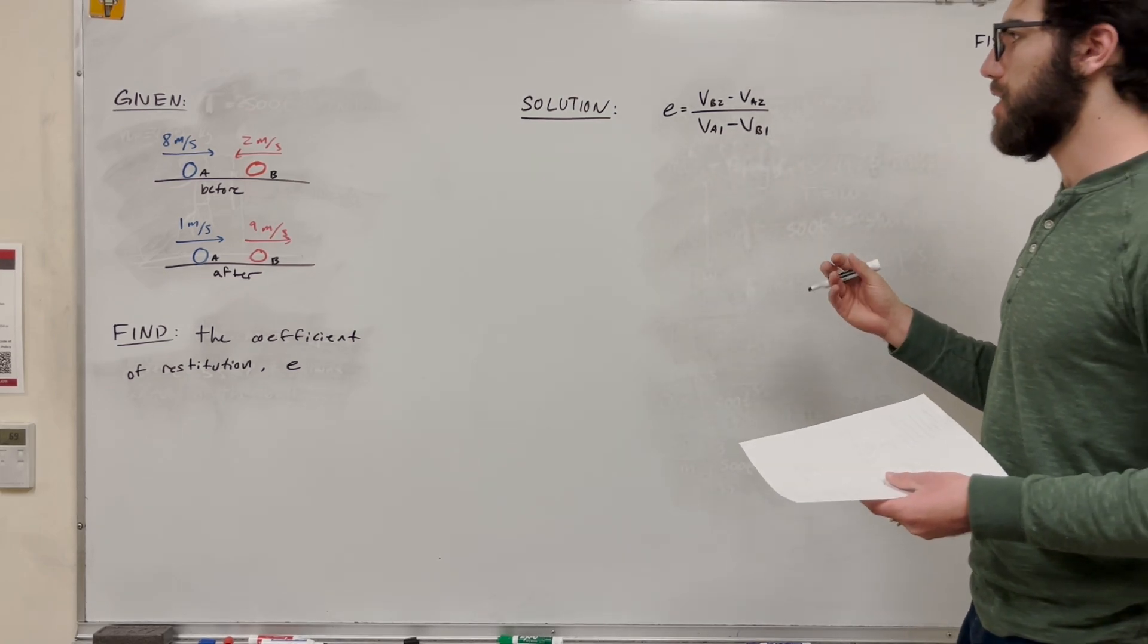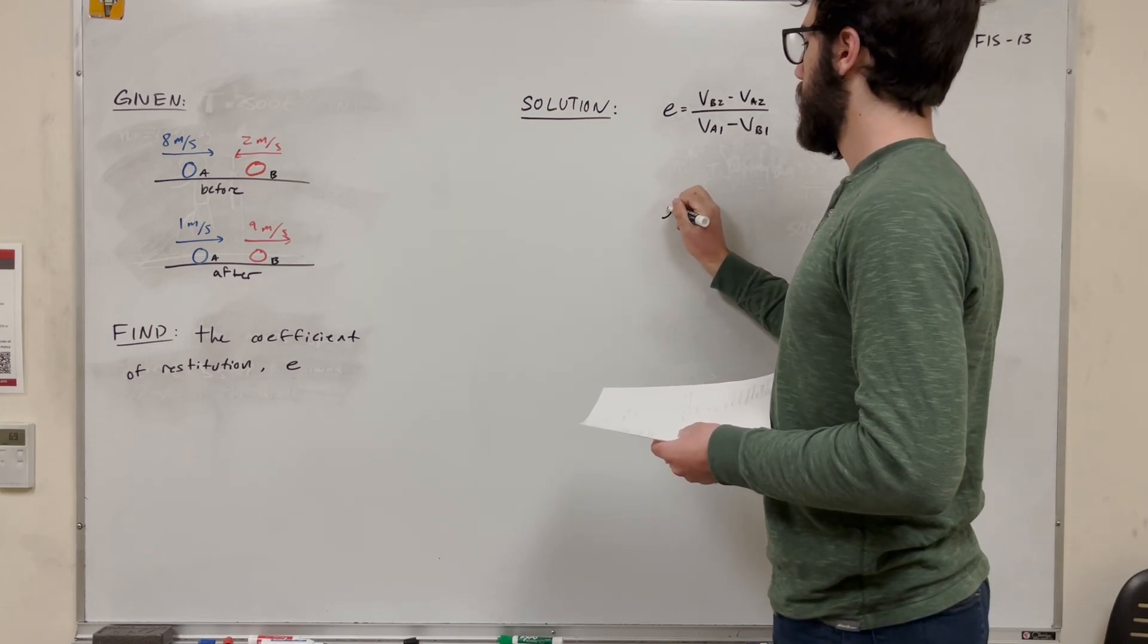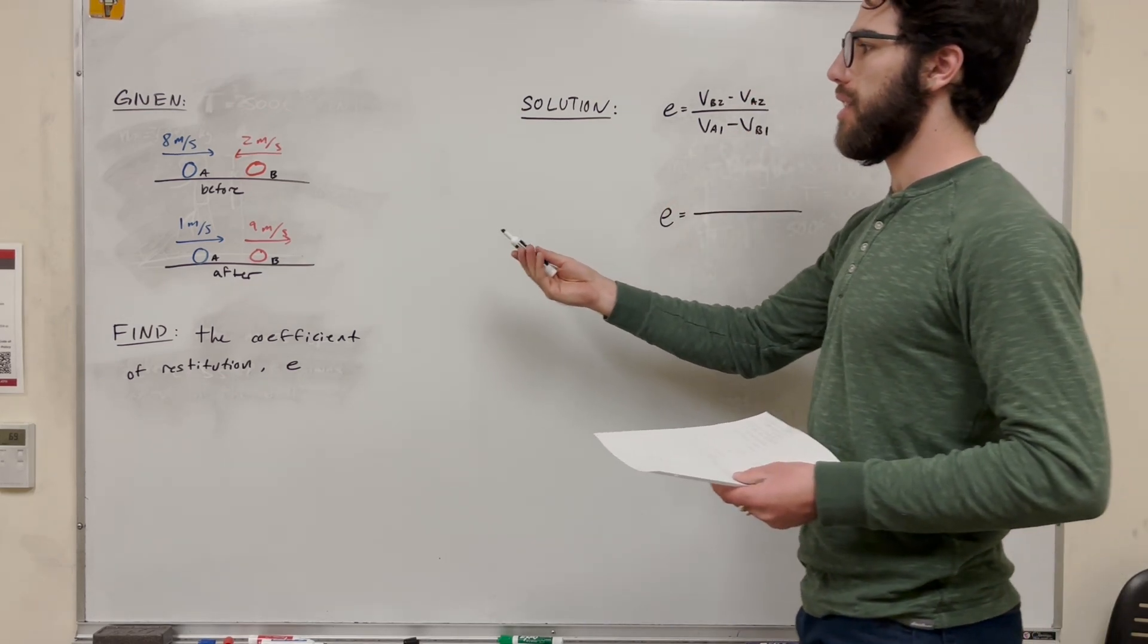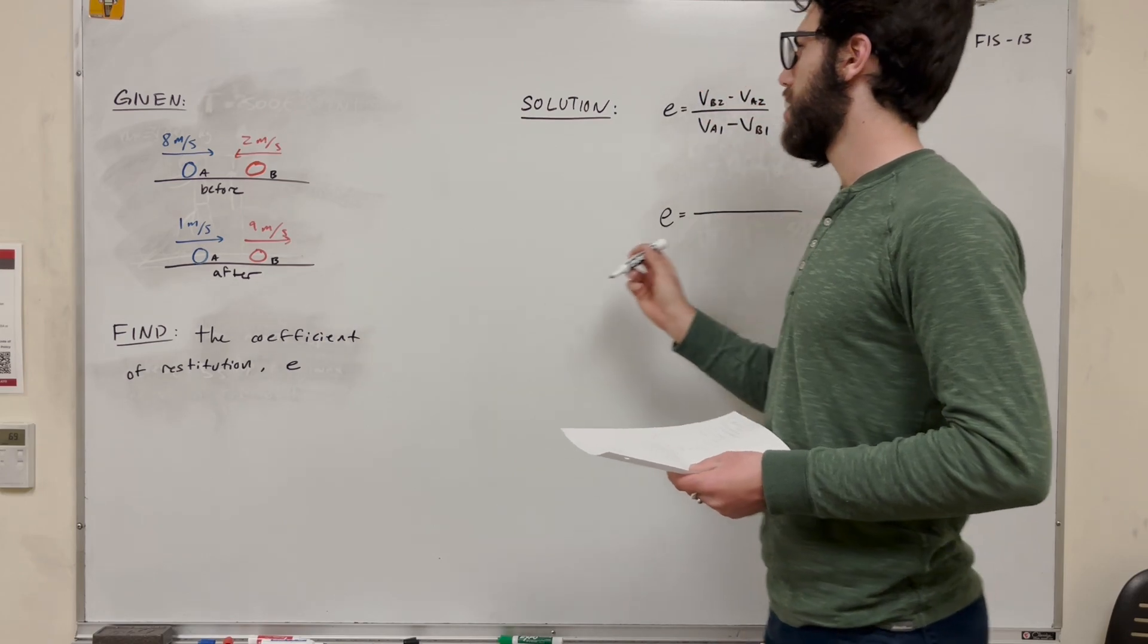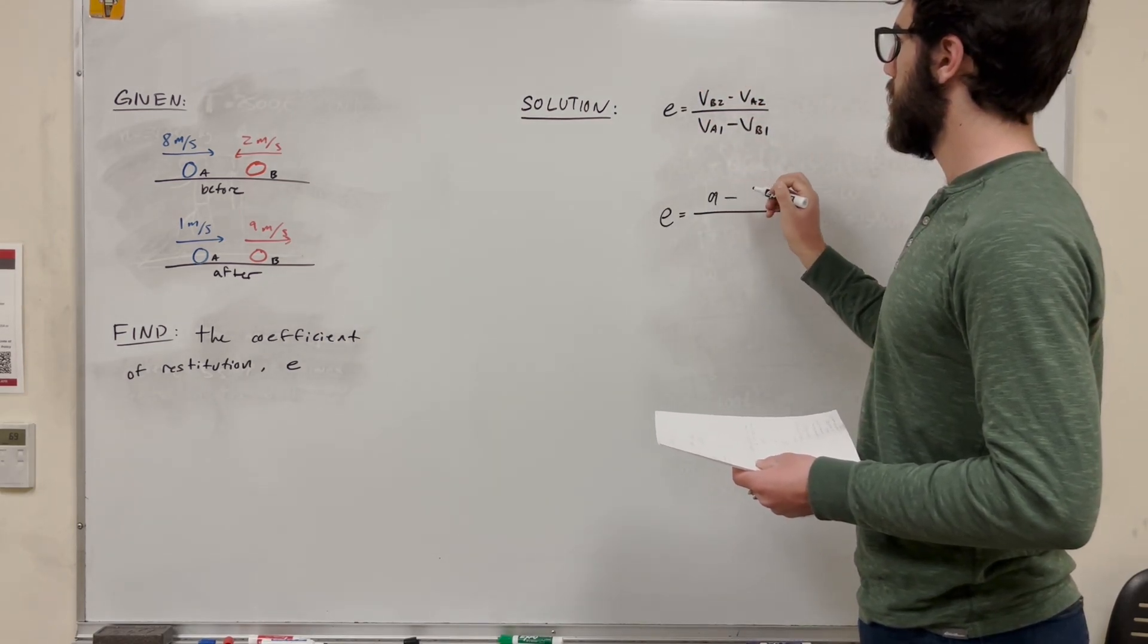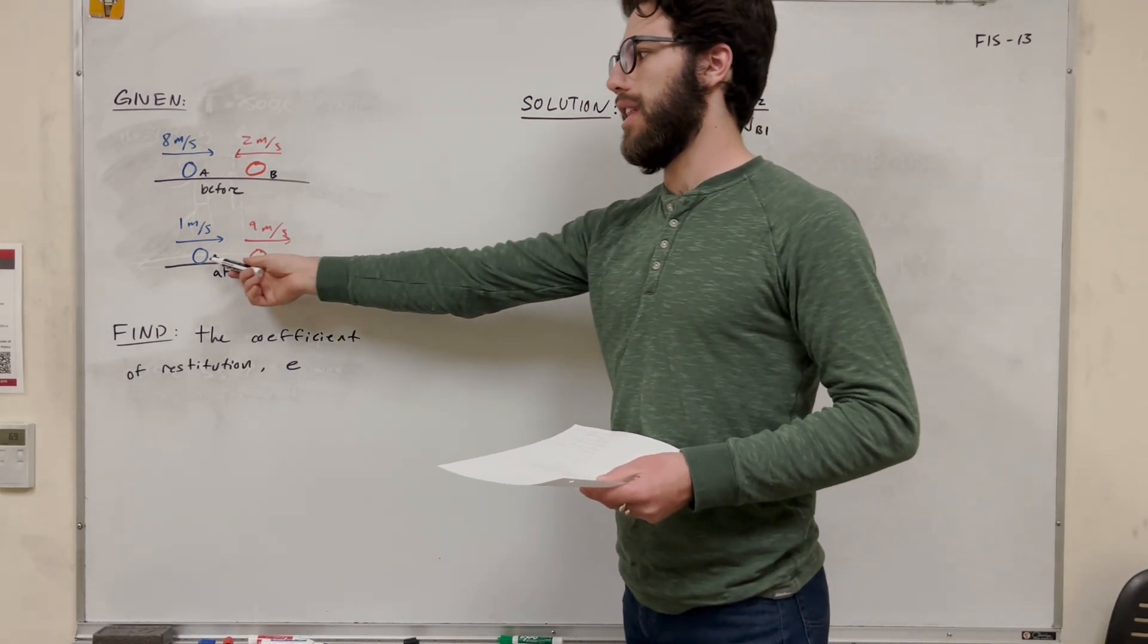So we're just going to be plugging in numbers here. Let's go ahead and do that. So b2, that's going to be the speed in the second after. It's going to be 9. And velocity a2, which is going to be this one, 1.